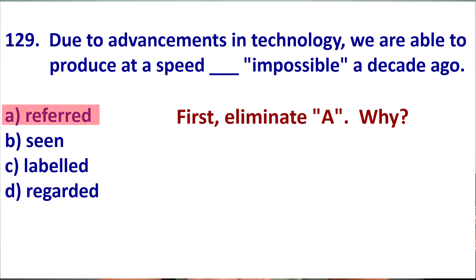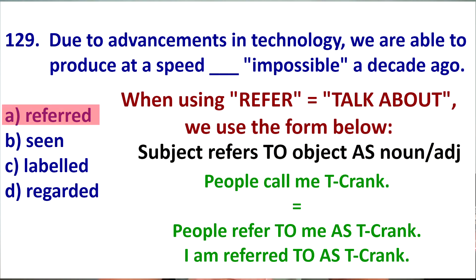Correct. The answer is A. Why? When we are using refer to say talking about, we use refer to something as name. So, we're saying someone calls it this name. If people call me T-crank, my friends refer to me as T-crank. I am referred to as T-crank. Do you notice how we have to and as here? The as, of course, is a preposition and the to is also a preposition. They do not disappear.